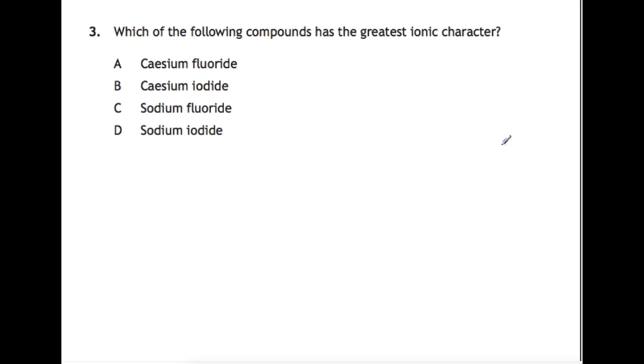Question 3. Which of the following compounds has the greatest ionic character? For this one I would look up the electronegativities of these elements. You'll find that caesium is 0.8 and sodium is 0.9. Fluorine is 4 and iodine is 2.6. So this means the electronegativity difference is 3.2, 1.8, 3.1 and 1.7. So the greatest ionic character is always where you have the biggest electronegativity difference. So that means that our answer is caesium fluoride A.